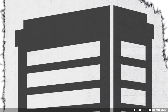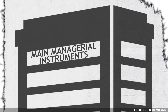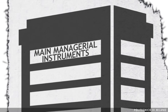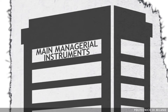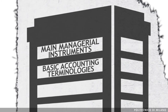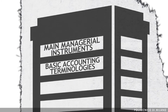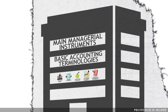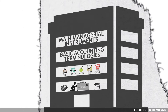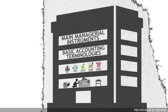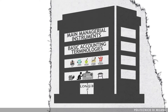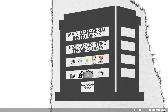The course will provide you with the main managerial instruments to understand how companies function. We will cover basic accounting terminologies, then move into understanding financial statements, then management accounting and cost accounting, and finally the main approaches to deal with long-term and short-term decisions.